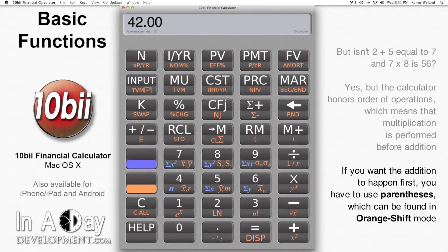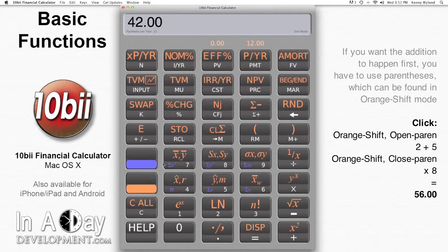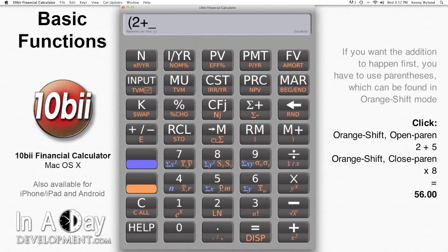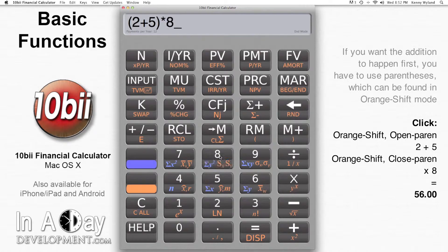If we want to make sure the addition happens first, we have to use parentheses, which you find in orange shift mode. Let's do that now. Hit orange shift, open paren, 2 plus 5, orange shift, close paren, times 8, and hit equals. And we get 56, as expected.